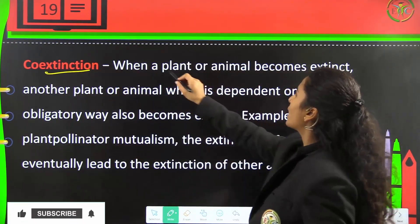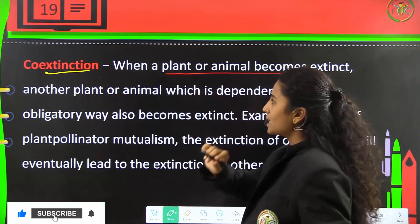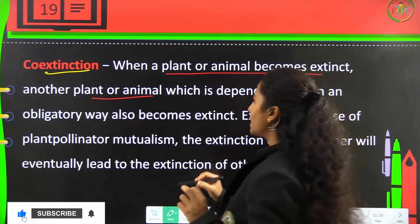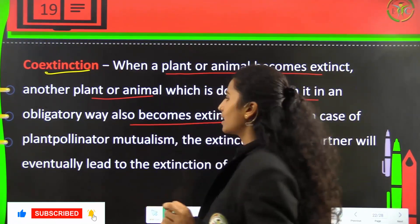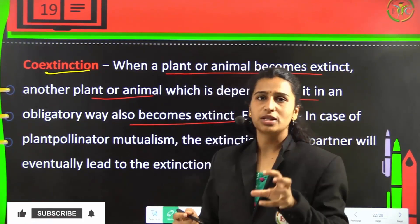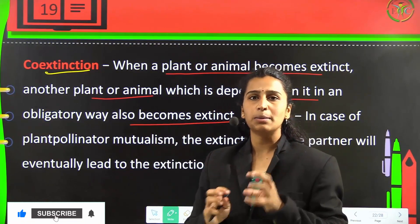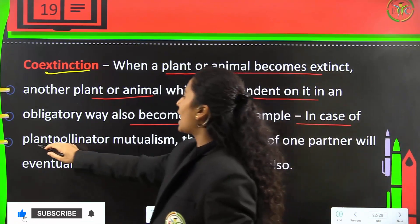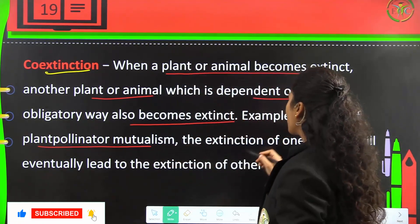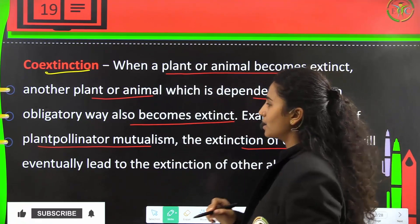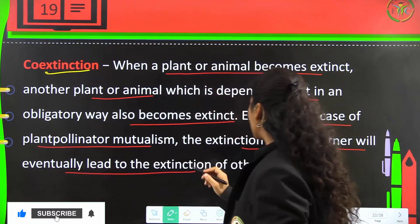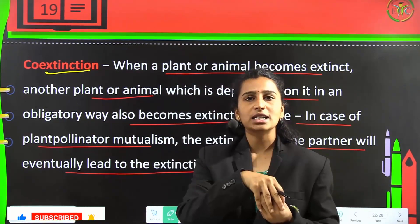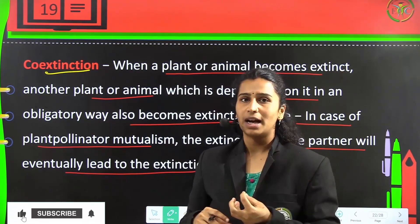When a plant or animal becomes extinct, other species which are obligatorily dependent on it will also become extinct. An example is plant-pollinator mutualism: the extinction of one partner will eventually lead to the extinction of the other. So if plant pollinators go extinct, the dependent plant species will also become extinct.